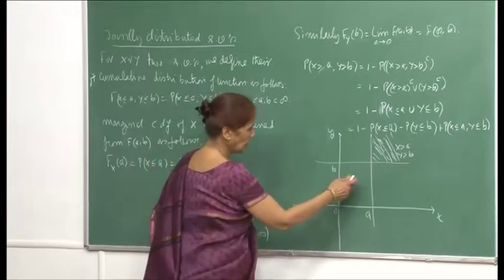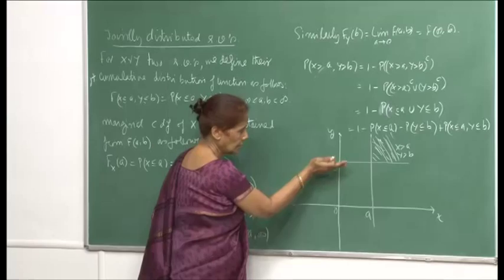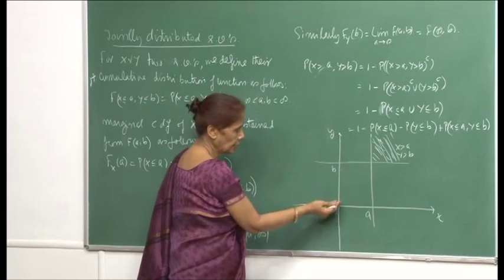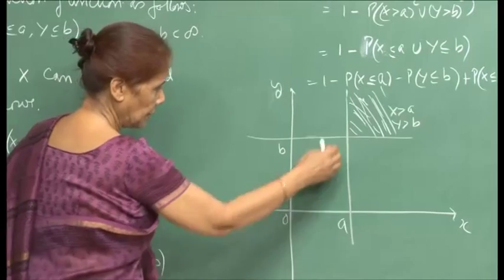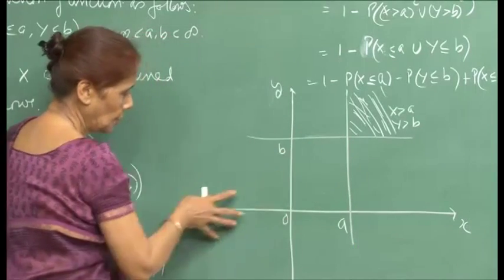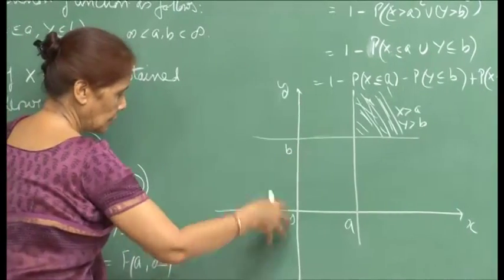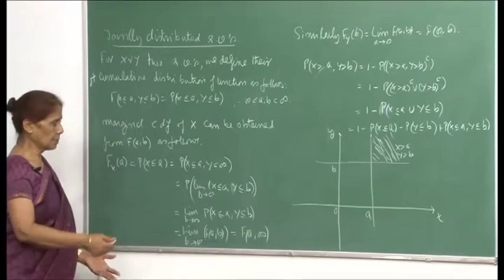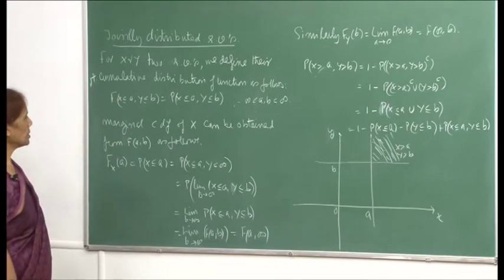Essentially, in this diagram, if this is b, then you are asking for Y ≤ b and X ≤ a. It will be this whole region — the whole of R² extending from here, talking of the probability over this region.